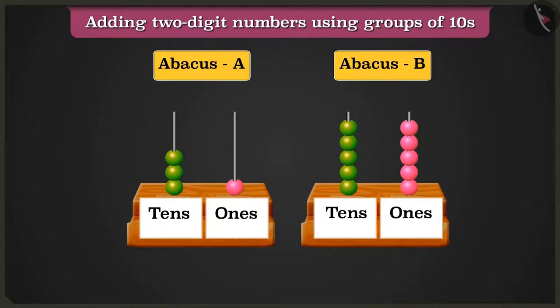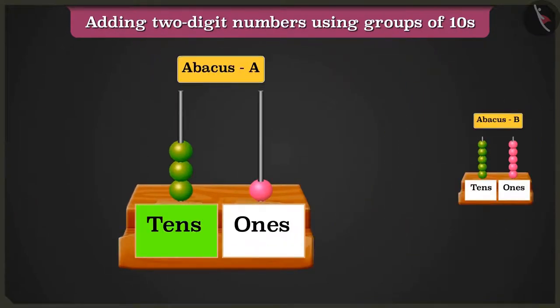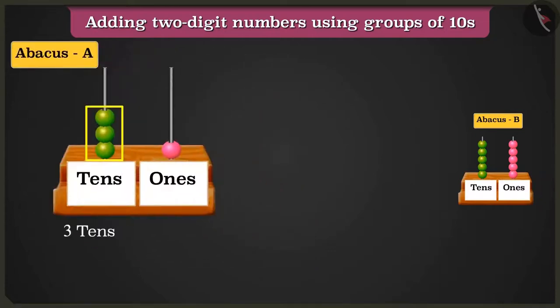Look, in abacus A, the box of tens has 3 beads and the box of ones has only 1 bead. So here abacus A has 3 tens and 1 one.